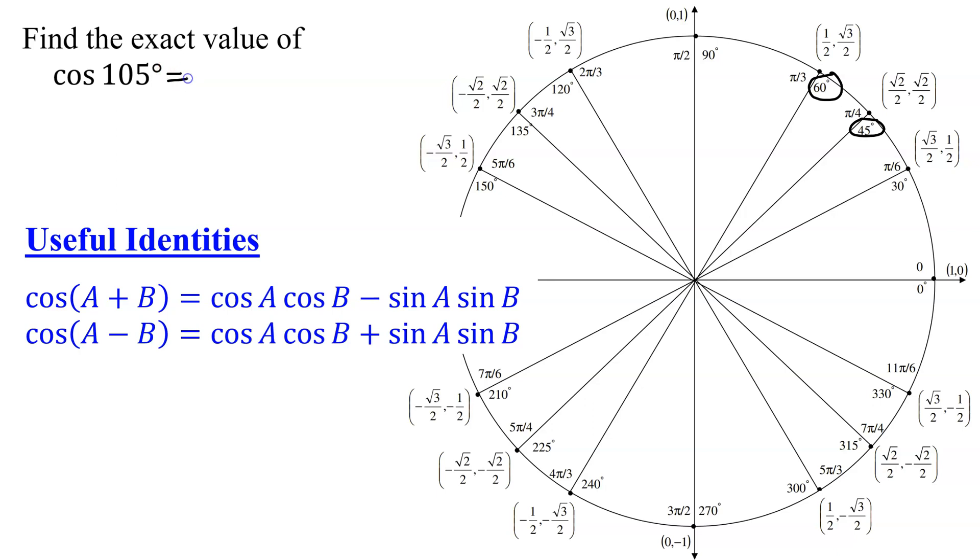So I'm going to work out the cosine of 105 degrees by evaluating the cosine of 60 degrees plus 45 degrees. However, I could have used the cosine of a difference and then said 105 degrees is 135 degrees minus 30 degrees. Remember, there are quite a few different ways of doing this problem.